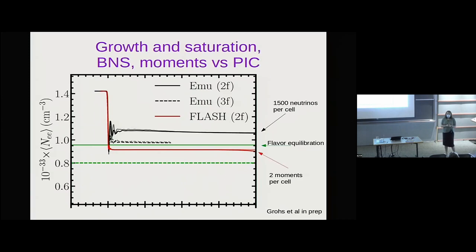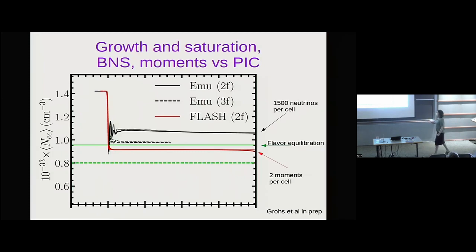These simulations were done by Evan Grohs. This is the number density of neutrinos you started with using the moment method. At first, if you're looking at the density of electron neutrinos, nothing seems to happen. Then you have a sudden drop — that's the growth phase. Then you tend to level out — that's the saturation.